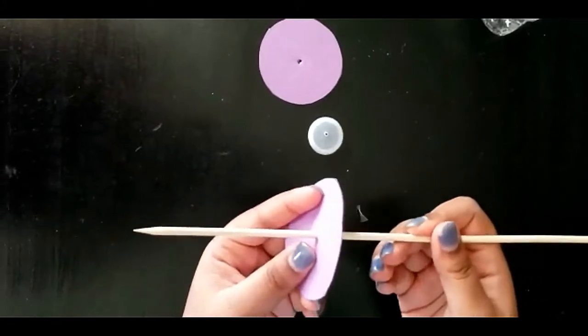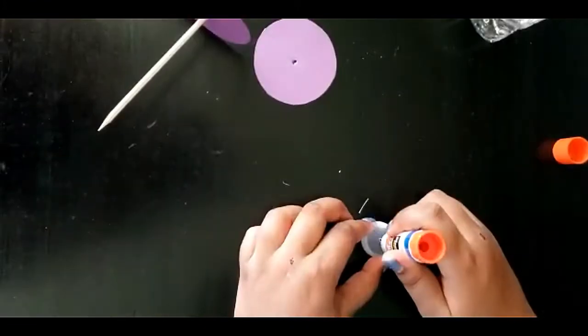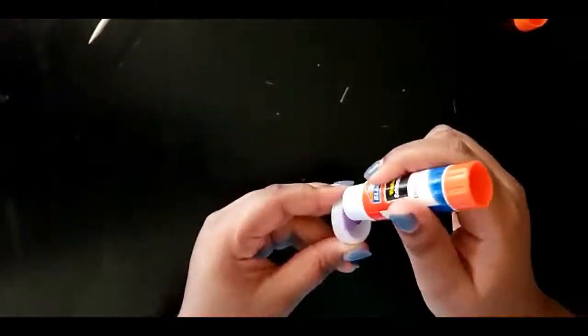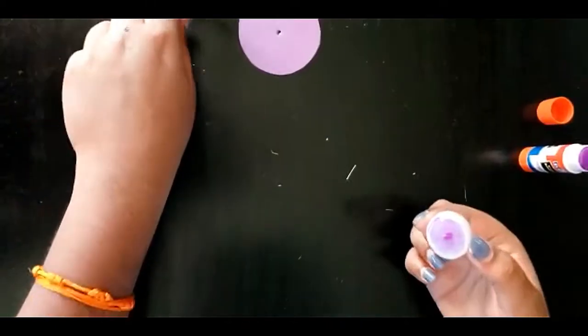Then push one circle through the skewer. Put some glue on one side of the bottle cap. Like this. Push that through.